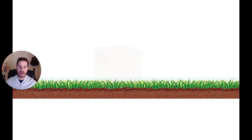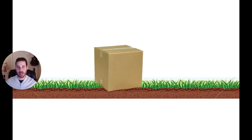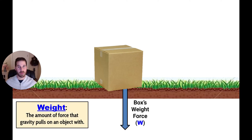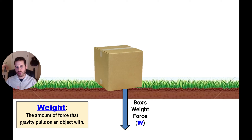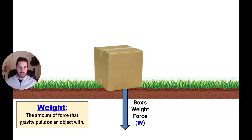Picture a flat ground and imagine that an object is on top of it. What kind of forces are in this situation? Well, since that object has mass, you can assume that gravity is going to pull on it with a certain amount of weight. Weight is the amount of force that gravity pulls on an object with, and it's always directed downward toward the center of the earth. This arrow drawn on the box pointing down represents the weight that the box has.